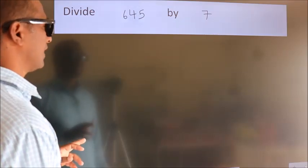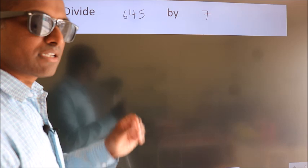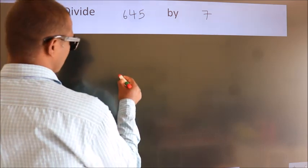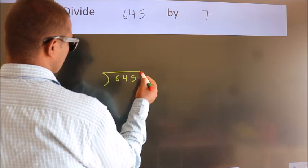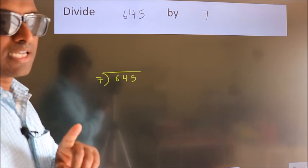Divide 645 by 7. To do this division, we should frame it in this way: 645 here, 7 here. This is your step one.